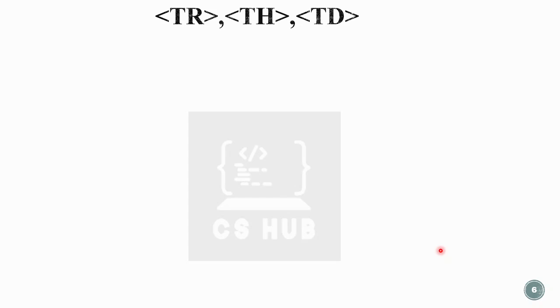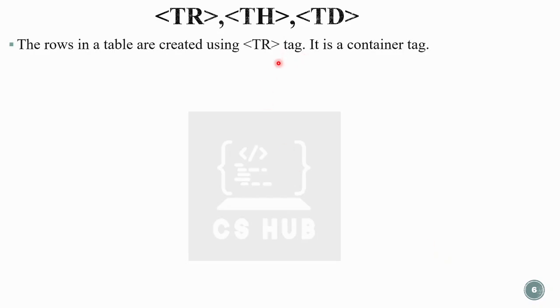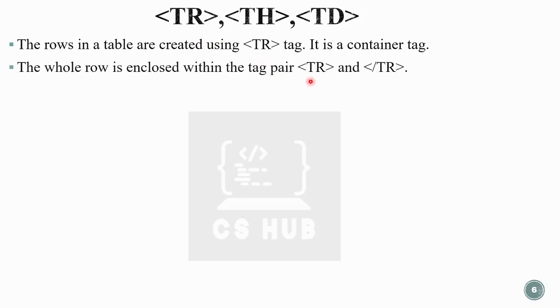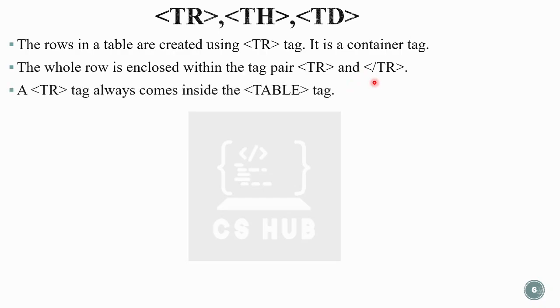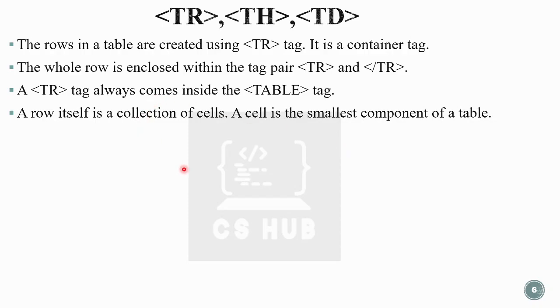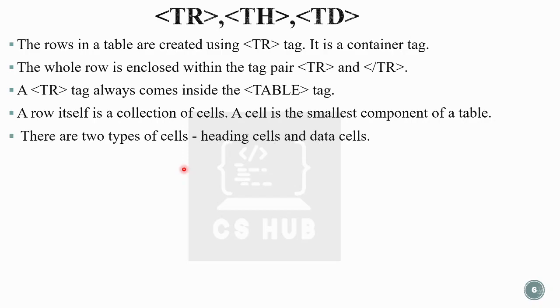The important tags that support the table tag are tr, th, and td. TR means table row, TH means table heading, TD means table data. Rows in a table are created using the tr tag, which is a container tag — all row content is enclosed within tr and closing tr. The tr tag always comes inside the table tag. A row is a collection of cells, and a cell is the smallest component of a table.